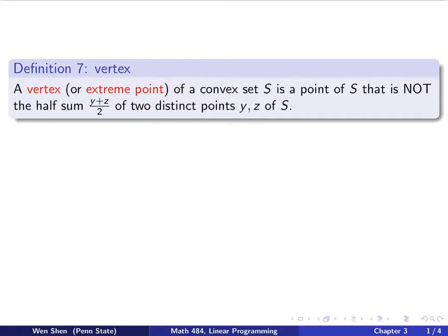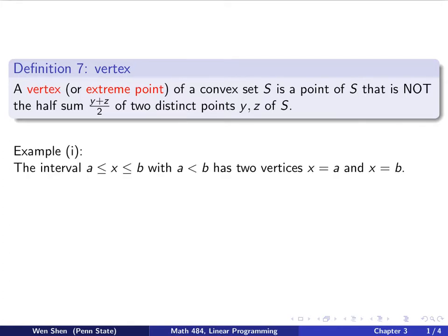We will take some examples to get ourselves more familiar with the concept. Let's start with the simplest possible example. In 1D, we are looking at the interval from A to B for the x values, where A is strictly less than B. We claim that x equal A and x equal B are two vertices of this set.